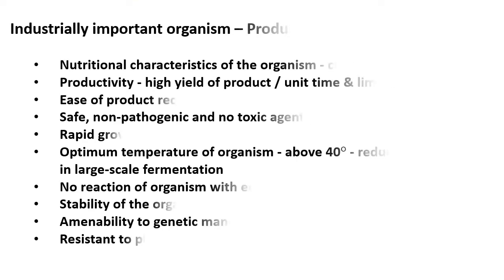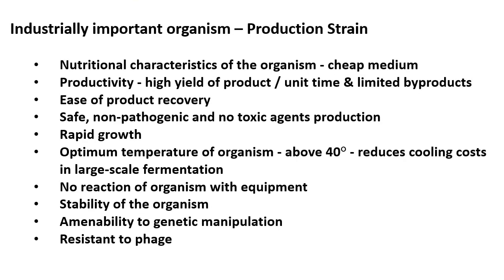If we have to use a microorganism as an industrially important production strain, it should ideally have the following properties: the nutritional characteristics should allow it to grow in a cheap medium, it should have high productivity, and it should not produce different types of by-products. The product should be easily recovered from the culture during downstream processing.